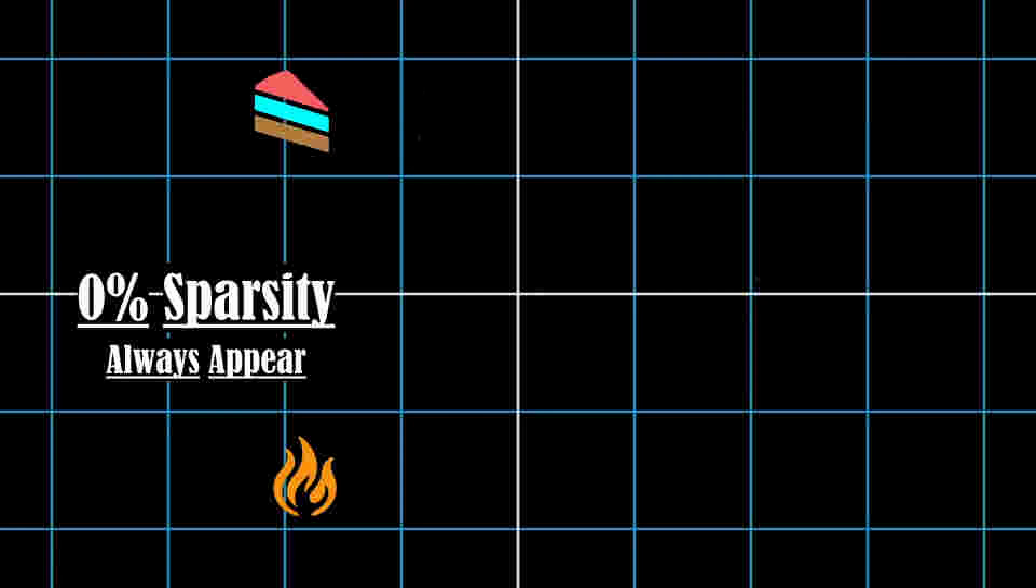If all features have zero percent sparsity, that is, all inputs always contain all features, the model learns to not represent the least important features to avoid interference. That is, it learns to represent two features which are orthogonal to each other, while the rest of the features are mapped to zero.